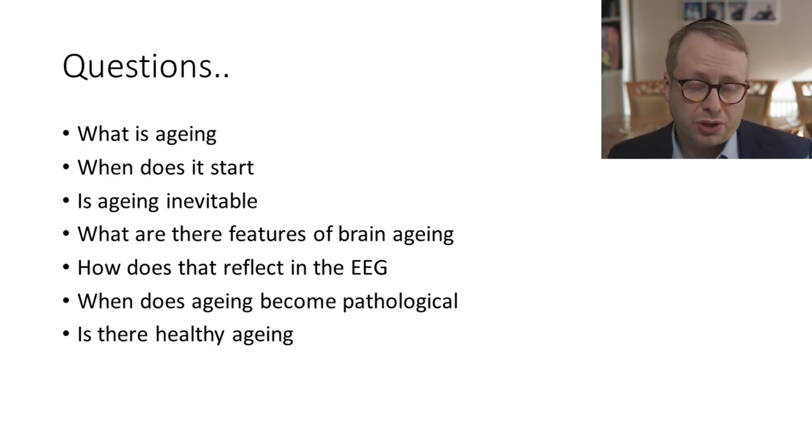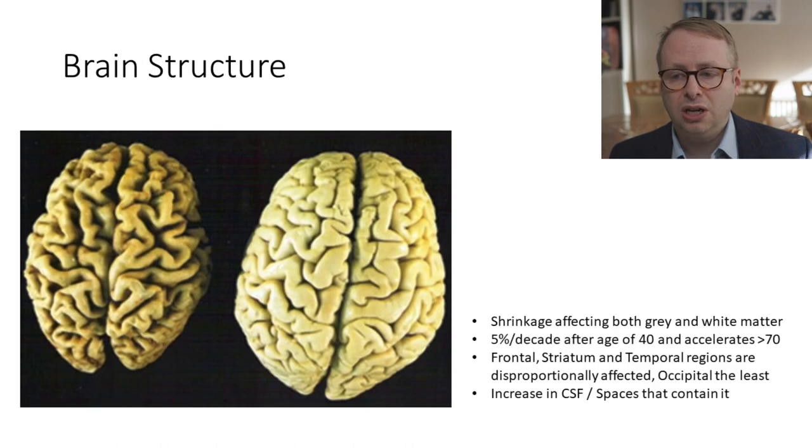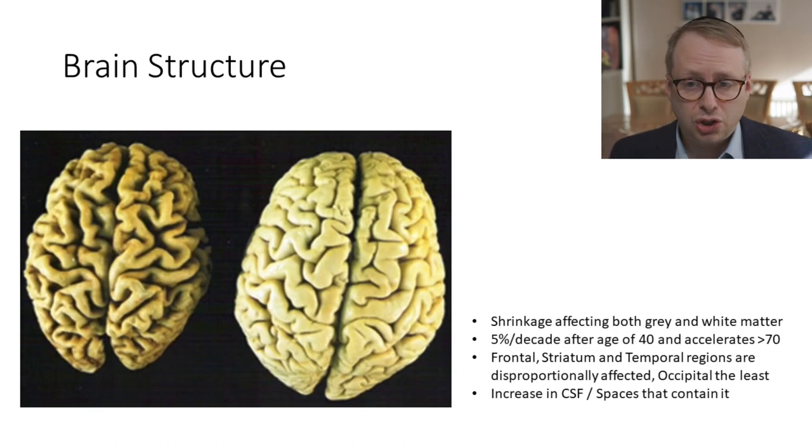Let's start by looking at what the human brain looks like as we become older. The brain on the right is a mature adult brain, and the one on the left is from someone who is already a fair bit older. We can see quite striking shrinkage of the brain. In fact, the process of shrinkage starts to occur from about the age of 40, about 5% per decade until we reach the age of about 70, where it starts to accelerate even further. All parts of the brain will shrink, but some more than others.